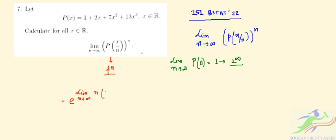That is f which is here P(x/n) minus 1. So what will be P(x/n)? If we put the values of P(x/n), it's e to the power limit n tends to infinity, n times [1 + 2x/n...